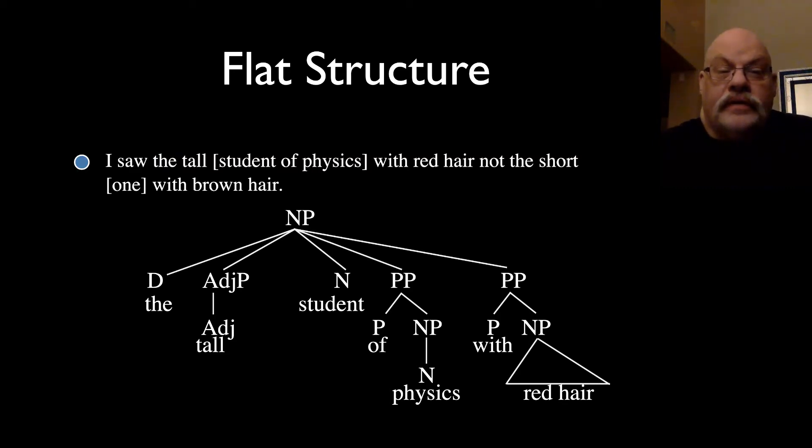So let's take this sentence. I saw the tall student of physics with red hair, but not the short one with brown hair. This is an example of replacement. So what are we replacing? We're replacing the bit of structure that is student of physics, and we're replacing it with the word one.